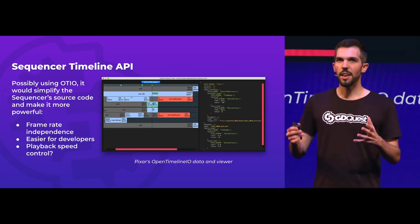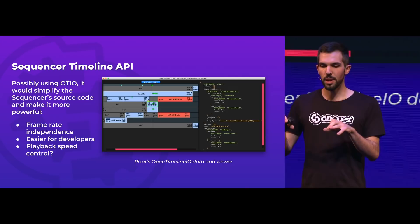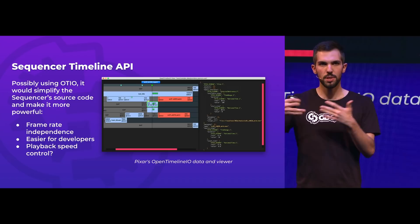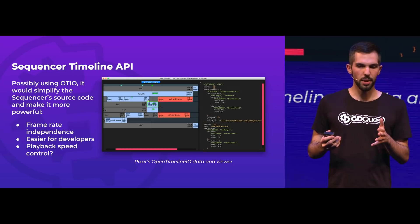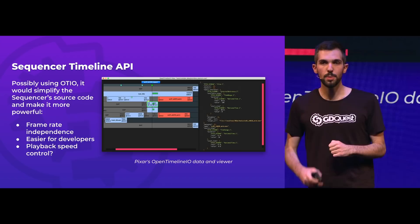One thing that Richard, the maintainer, wants to do is a sequencer timeline API. Right now you can't use footage with different frame rates in Blender — there are all kinds of issues with that. Pixar developed OpenTimelineIO, an interchange format that standardizes how you handle footage: the position on the boards, the length of the strips, and so on. This would bring quite a few advantages and improvements, and for you the user, it would mean being able to just put footage in the sequencer and have it work. It would also be much easier for developers to contribute.